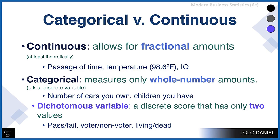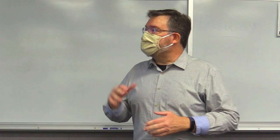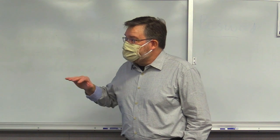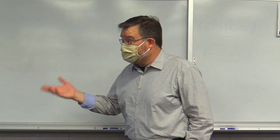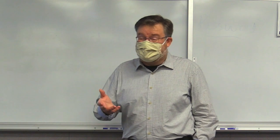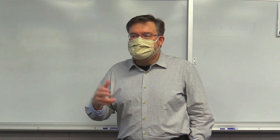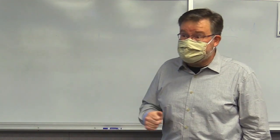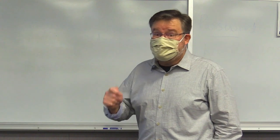Versus categorical measures, which can only be whole numbers. If I ask how many cars do you own, how many children do you have, how many pets — those have to be whole numbers. When we use things like a mean with categorical data, it can give us misleading numbers. Like 'the average American family has 2.3 children' or 'the average American owns 1.4 cars' — no one actually owns a decimal point worth of cars, but it still makes sense.